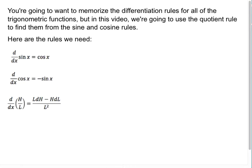You're going to want to memorize the differentiation rules for all six trig functions, but in this video specifically, we're going to use the quotient rule to find them from the sine and cosine rules that we already know. The rules we need are the derivative of sine, which is cosine, the derivative of cosine, which is negative sine, and the quotient rule. We're going to find the derivatives of the four other trig functions — tangent, cotangent, secant, and cosecant — using those rules.